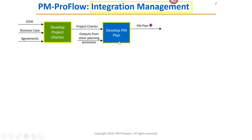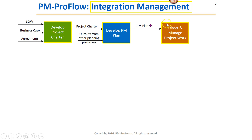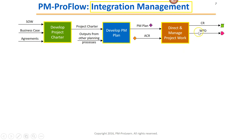The output of Develop PM Plan is the project management plan. Notice there is an on-page connector — a colored shape — that we'll see somewhere else on this page to show you where it's used. The PM Plan is an input to a process called Direct and Manage Project Work, which is highlighted in brown because we're now in the Executing Process Group. We also need approved change requests as an input, shown by an on-page connector. The outputs of Direct and Manage Project Work are Change Requests, Work Performance Data, and Deliverables.